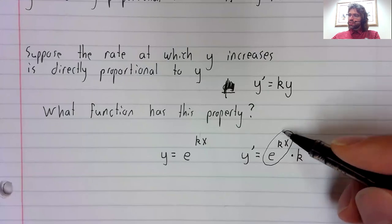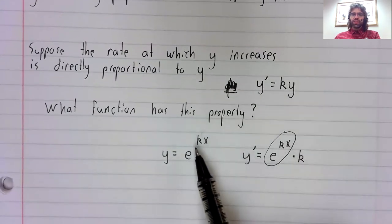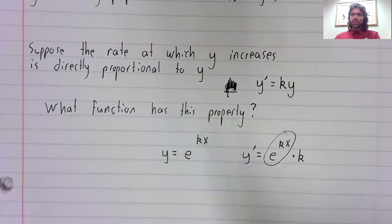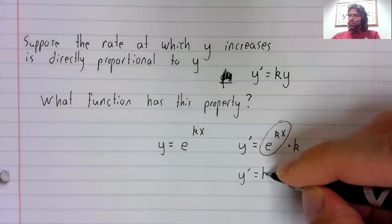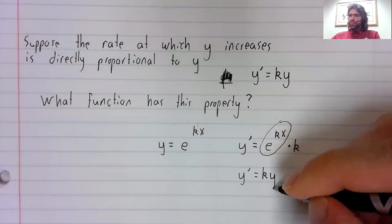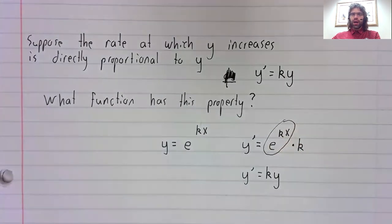Since e to the kx is y, we get y prime equals k times y.